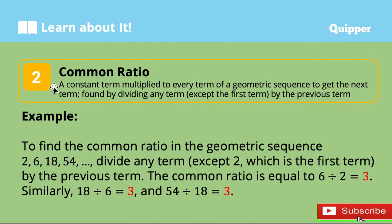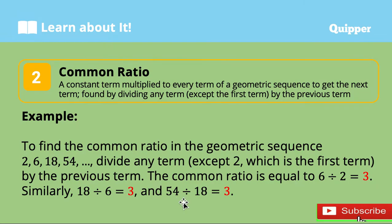A common ratio is a constant term multiplied to every term of a geometric sequence to get the next term. This common ratio is found by dividing any term except the first by the previous term. For example, to find the common ratio in the geometric sequence 2, 6, 18, 54, and so on, divide any term except 2, which is the first term, by the previous term. We have 6 divided by 2 is 3, 18 divided by 6 is 3, and 54 divided by 18 is 3. This common quotient, which is 3, is what they call the common ratio.